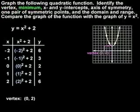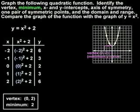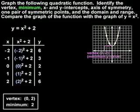Next, we're asked to identify the minimum value, or the smallest y value, of the function. It's important to understand that the minimum value always comes from the y value of the vertex, which in this case is 2. This should make sense because we can see that no point on the parabola has a y value that is less than 2.